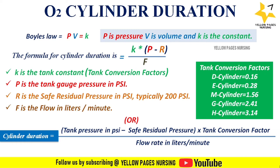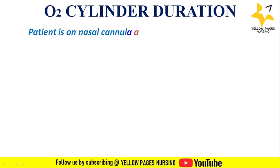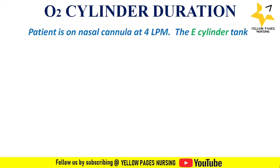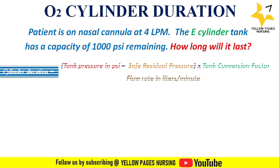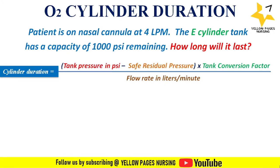A patient is on nasal cannula at 4 liters per minute. The E-cylinder tank has a capacity of 1000 PSI remaining. How long will it last? The formula: tank pressure in PSI minus safe residual pressure, multiplied by the tank conversion factor, divided by flow rate in liters per minute.